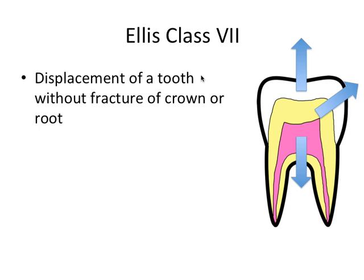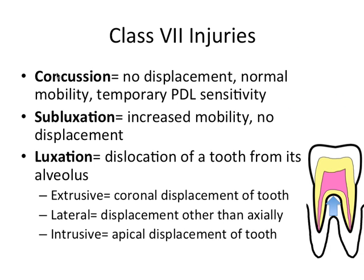Ellis class 7 involves a displacement of a tooth without fracture of the crown or root — the tooth is just moving or being dislocated from the socket. These injuries include concussion, which like a blow to the head will hurt — there's no displacement, the tooth has normal mobility, but the periodontal ligament is temporarily very sensitive. Subluxation refers to increased mobility but again no displacement — a loosening of the tooth in the socket. Luxation refers to actual dislocation — I remember that because luxation sounds like dislocation.